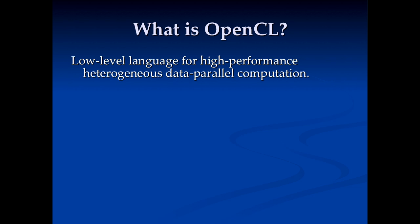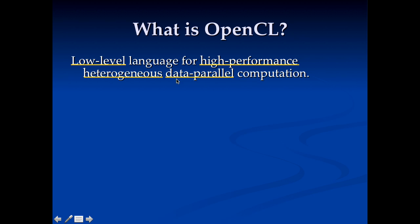So what is OpenCL? OpenCL is a low-level language for high-performance, heterogeneous, data-parallel computation. Low-level means it's not going to do a lot of details for you — you have to handle stuff yourself. High-performance means you can get really good performance if your code is matched to the hardware. Heterogeneous means it supports multiple types of devices: you can compile the same OpenCL code and run it on CPUs, GPUs, and even FPGAs. Data parallel is one particular type of parallelism, and it's OpenCL's best strength because that's what GPUs are suited for.